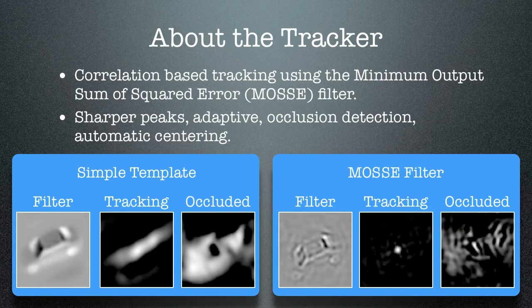The tracker that we're using is based on correlation. What makes it unique is that it uses a minimum output sum of squared error filter. This filter produces much sharper peaks than what you'd get with a simple template. It's adaptive, so it changes as the appearance of the vehicle changes. You can also do occlusion detection and automatic recentering using this filter.